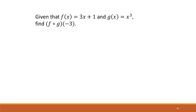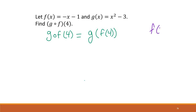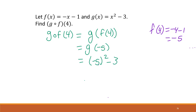Go ahead and try the next one on your own and check your answer in Blackboard. This one asks for g(f(4)). We start by computing f(4): that's −4 − 1 = −5. Now we put that into g: g(−5) = (−5)² − 3 = 25 − 3 = 22. The final answer is 22. The key difference is which function you evaluate first.